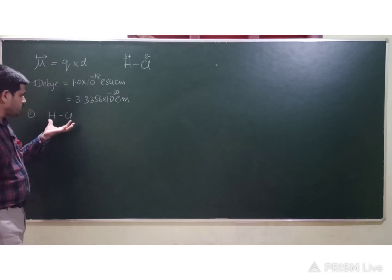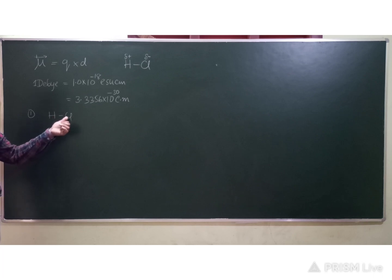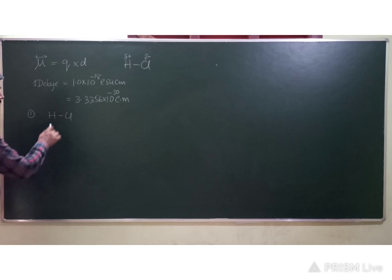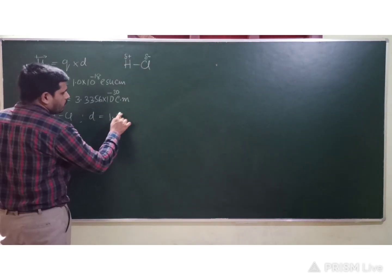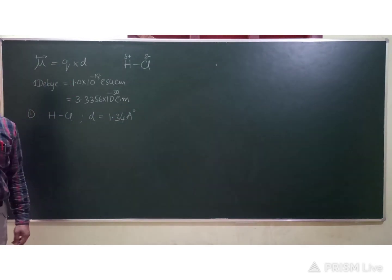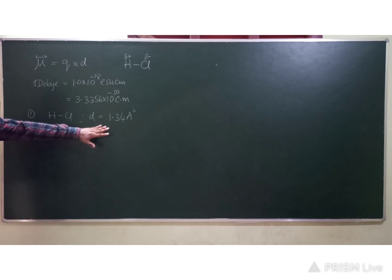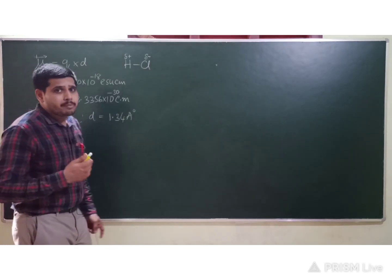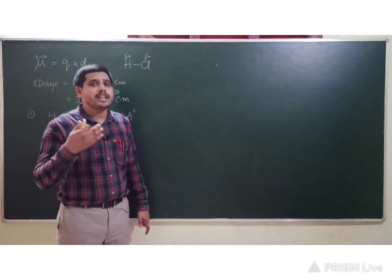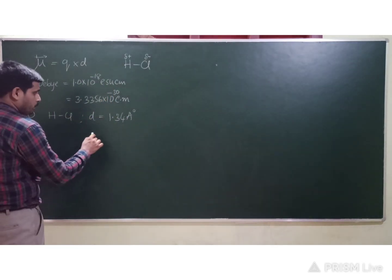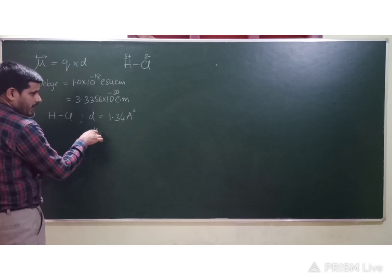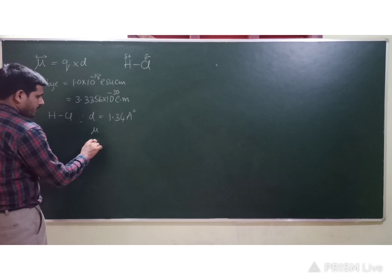We are told the bond length d = 1.34 Å. We need to find the ionic character. For this we are provided with both the experimental dipole moment and the theoretical dipole moment. Let me denote theoretical as μ and experimental as μ'. The formula to calculate ionic character (IC) is: IC = (μ_experimental / μ_theoretical) × 100.